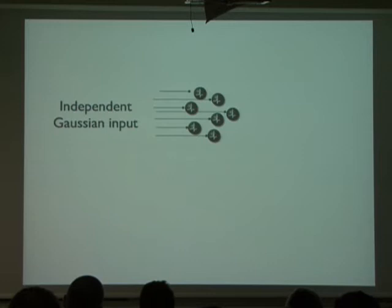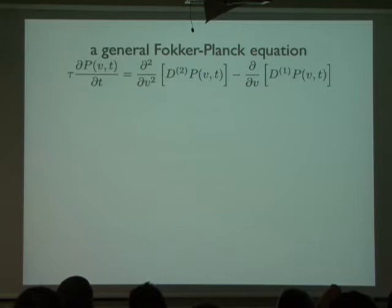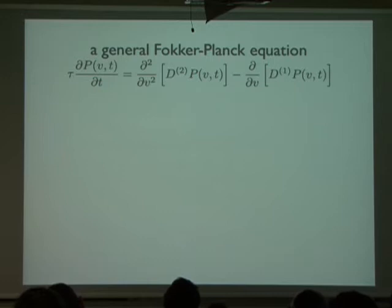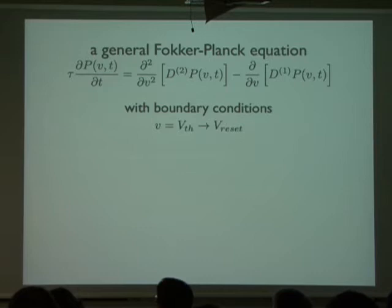If we assume that these neurons all receive independent Gaussian input, then we have a diffusion process and the dynamics are described by a Fokker-Planck equation. In general, agnostic to what flavor of spiking model we choose, the Fokker-Planck dynamics have the probability density over all voltages governed by diffusion and drift. For an integrate-and-fire model, we have a reset condition: when the voltage hits threshold you move it to reset. Although it seems almost trivial, this equation is actually the source of a lot of the problems people have run into.